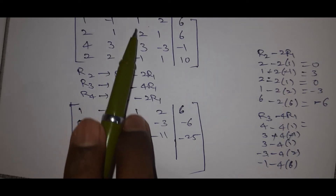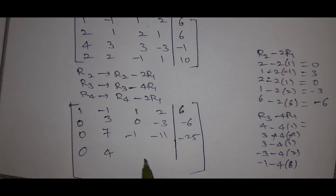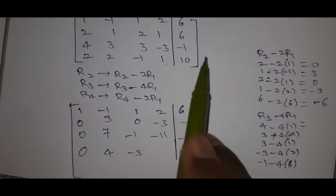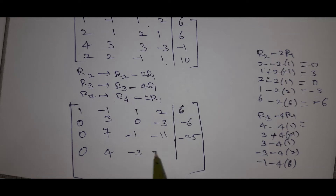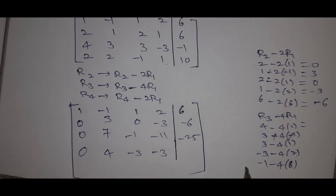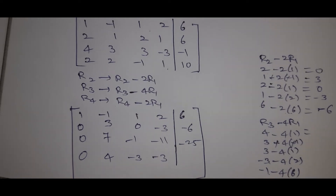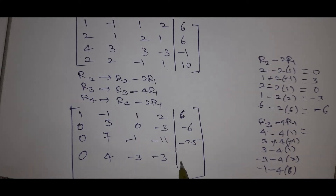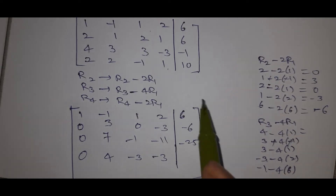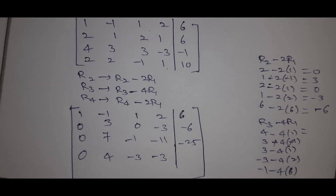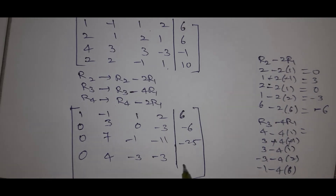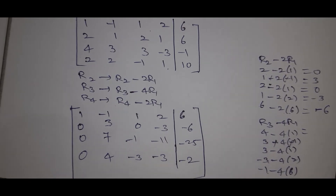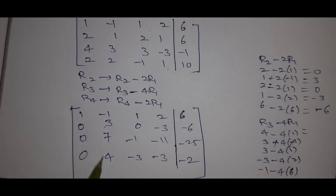Continuing R4 computation: -1, -1, -2 = -3. Then 1, -4 = -3 for that entry. Next: 10 - 12 = -2. So the last entry in R4 is -2. This gives the first j-entry equal to 0.